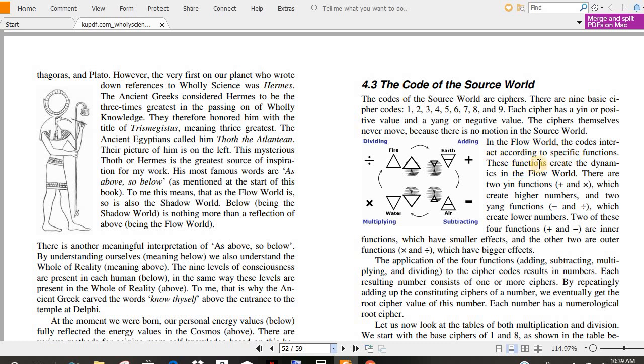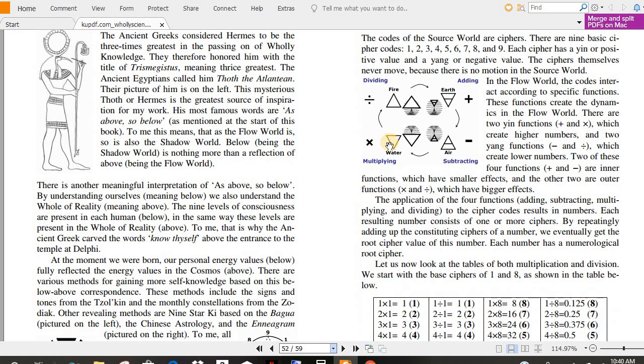In the flow world, the codes interact according to specific functions. These functions create the dynamics in the flow world. There are two yin functions, addition and multiplication, which create higher numbers, and two yang functions, subtraction and division, which create lower numbers. Two of these four functions, addition and subtraction, are inner functions which have smaller effects, and the other two are outer functions which have bigger effects.